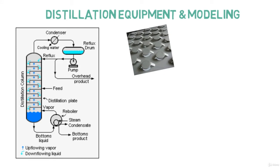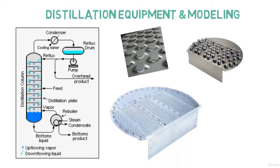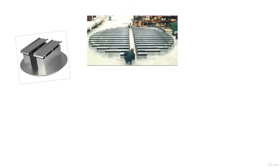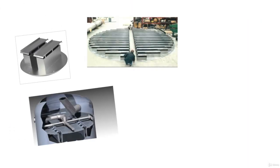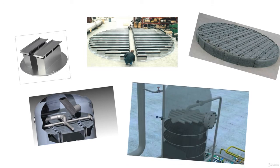The following section covers distillation equipment, such as sieve trays, valve trays, and bubble cap trays. Not only that, we continue with a deeper understanding of column internals, such as liquid holders, redistributors, demisters, and so on.